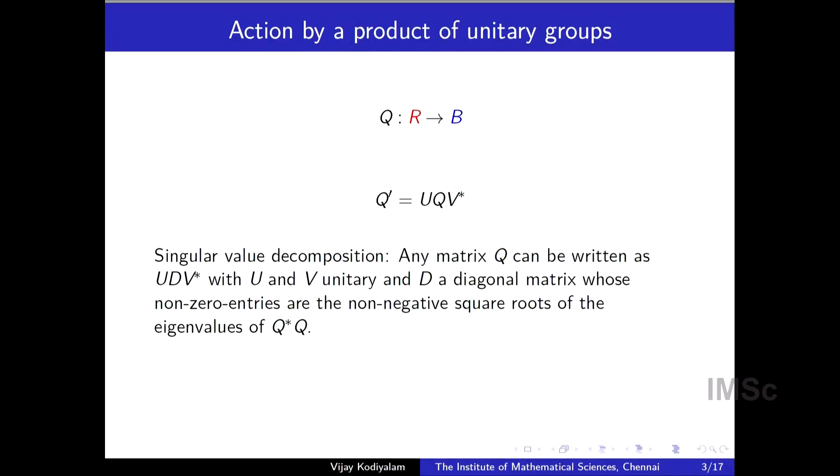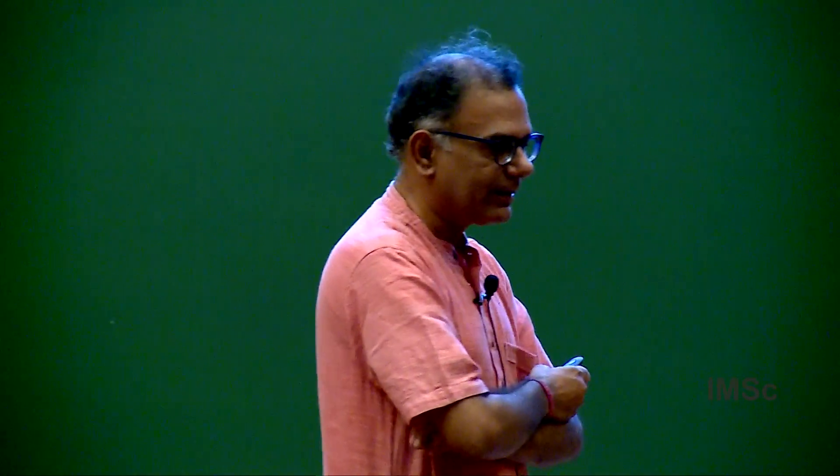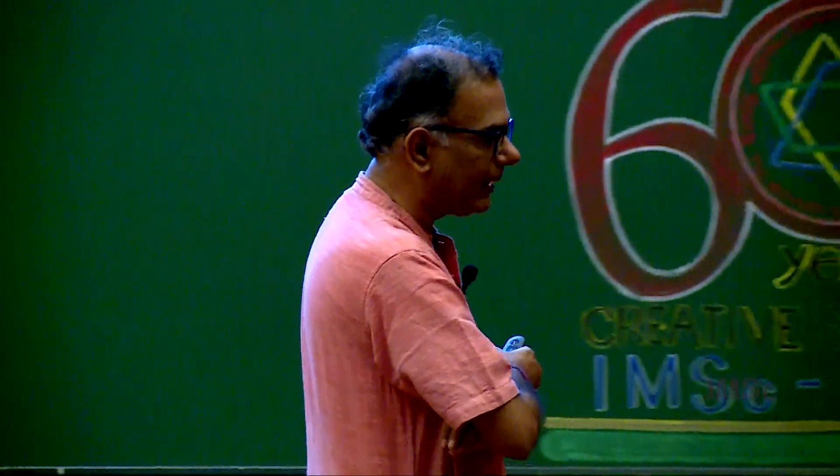What we want to know is under this change, what is it that remains unchanged about this operator? What is common to Q and Q dash? And this is a well known thing. So we know this singular value decomposition. Singular value decomposition says that any matrix Q can be written as U D V star with D diagonal. And its non-zero entries are the non-negative square roots of the eigenvalues of Q star Q. So what that says is essentially what is invariant here is the eigenvalues of Q star Q. Those are the invariants in this situation. And further these invariants are complete. If you know those eigenvalues, then you know Q up to multiplication on either side by two different unitaries, possibly different unitaries.